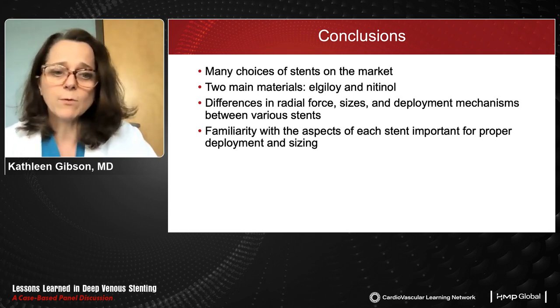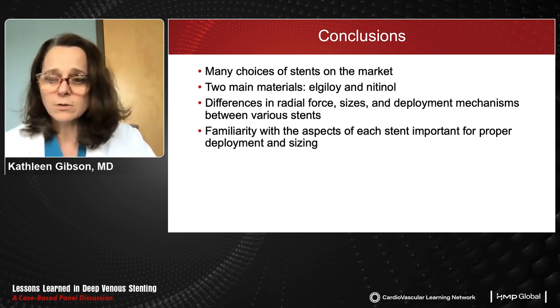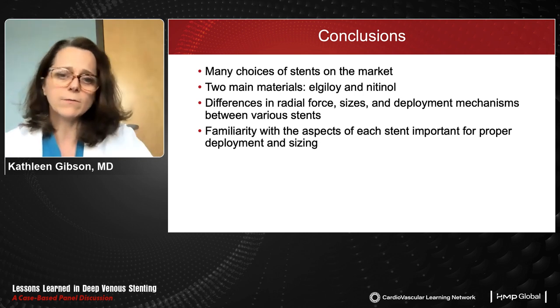Before going to the next section, the panel discusses stent selection. Dr. Murphy notes that many of his patients are post-thrombotic, making precise stent landing at the profunda important. Predictable and precise delivery is key. With caval involvement, only certain stents are large enough, and post-thrombotic patients need more radial resistive force to combat tough scarring — these are the main decision-making factors when choosing a stent.